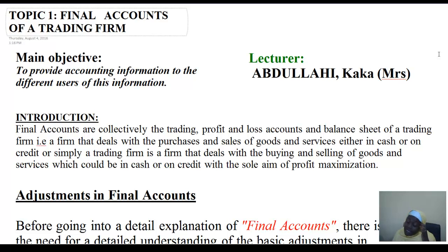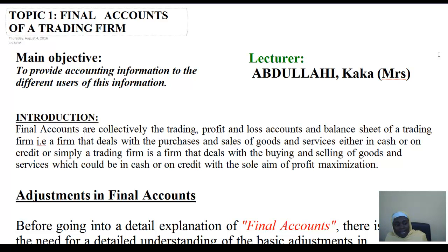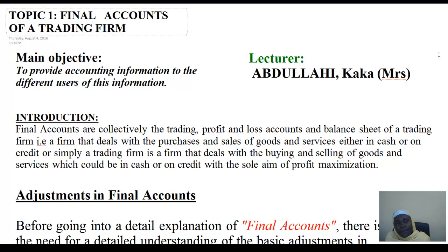Final account is simply nothing but a trading profit and loss account and a balance sheet of a trading firm. A trading firm is a firm that deals either with the sale or purchase of goods, which could either be in credit or in cash, and the main aim of a trading firm is to maximize profit.